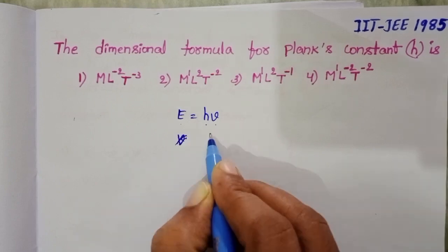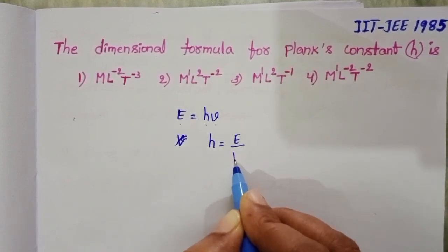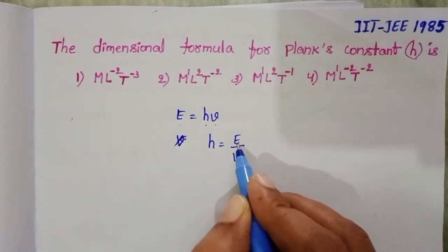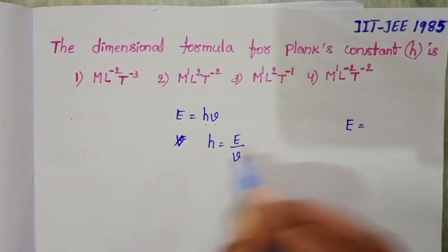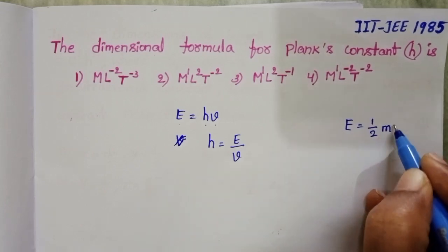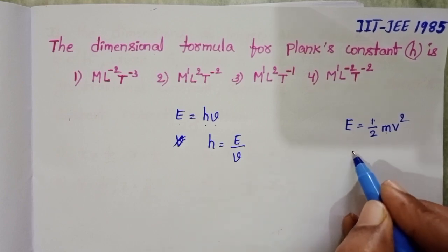From this, h equals E divided by ν. In place of energy, take the formula half mv squared. Half is a constant, and mass